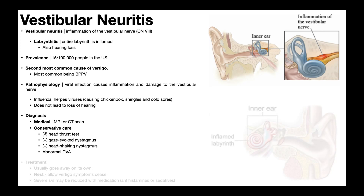If somebody presents to the physical therapy clinic complaining of dizziness, there are several general conditions you need to think about and rule out. The first is a central vestibular deficit. You perform your oculomotor exam — someone with a central vestibular deficit would have abnormal central signs: abnormal smooth pursuit, abnormal convergence, abnormal saccadic eye movement, and abnormal VOR cancellation tests.